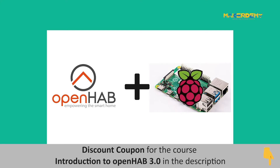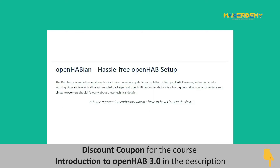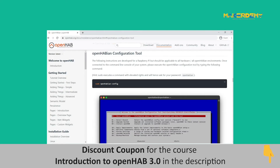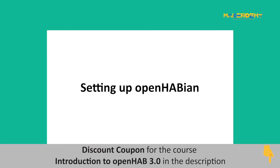As discussed in the previous video, setting up OpenHab on a Raspberry Pi is the best choice for our home automation system. The easiest method to install OpenHab on Raspberry Pi devices is using the self-configuring Linux system known as OpenHabian. Besides setting up OpenHab, OpenHabian also has a configuration tool that allows modifying many OpenHab-related settings and add-ons. Now let us have an overview of OpenHabian and learn how to install it.